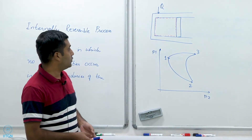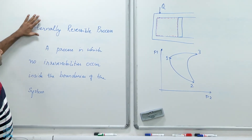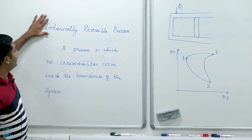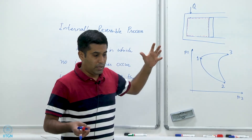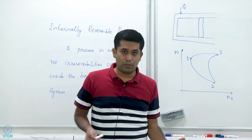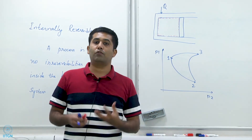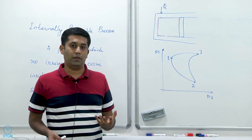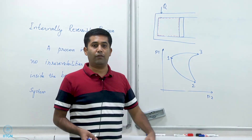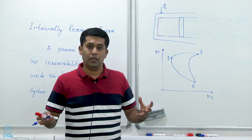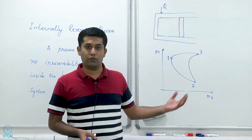That is why we have defined this concept called an internally reversible process — it is nothing but an irreversible process in which the irreversibilities are outside the boundaries of the system. We can then plot it on a 2D graph, show it on a property diagram, and use it to analyze real systems.